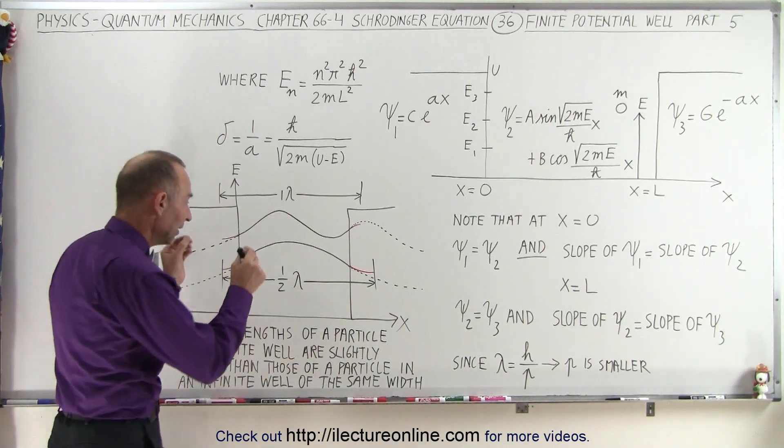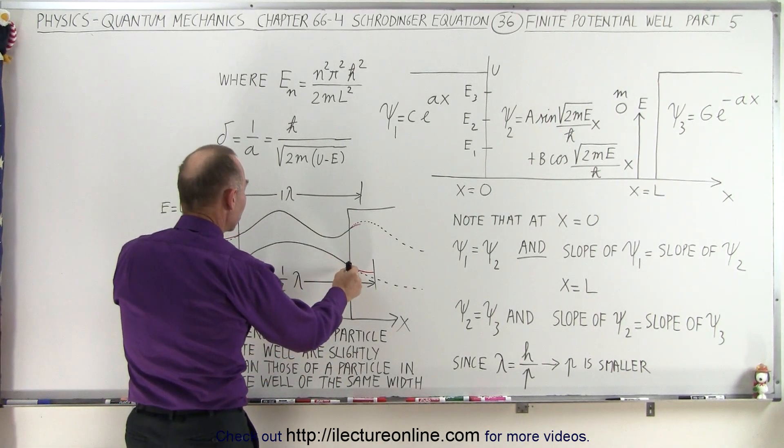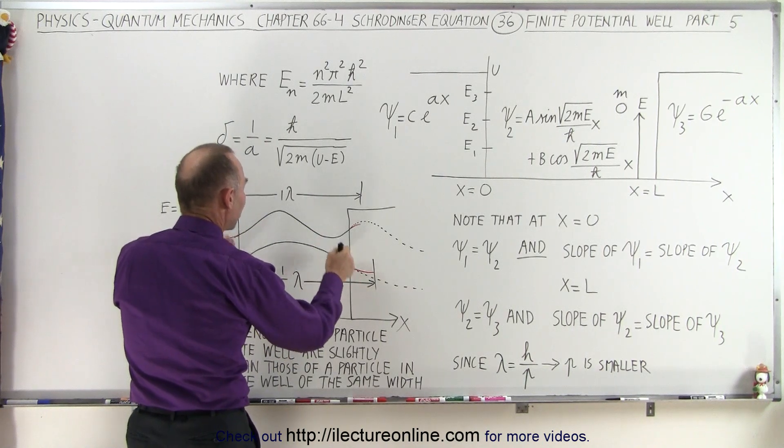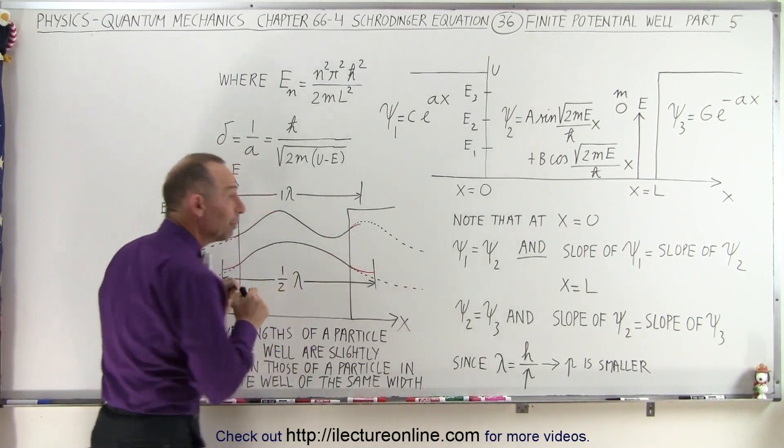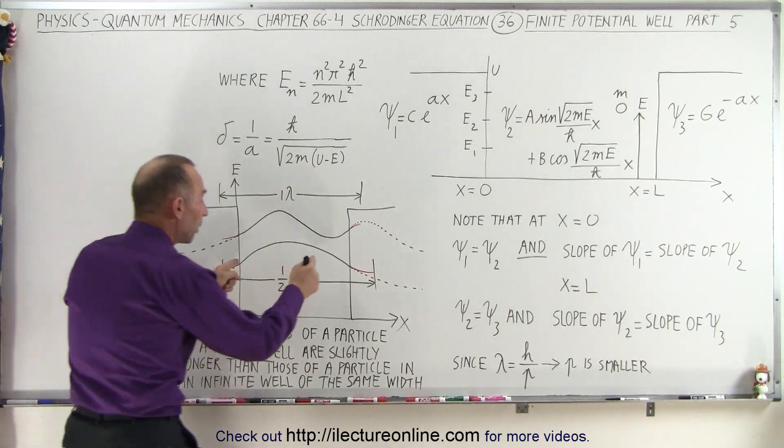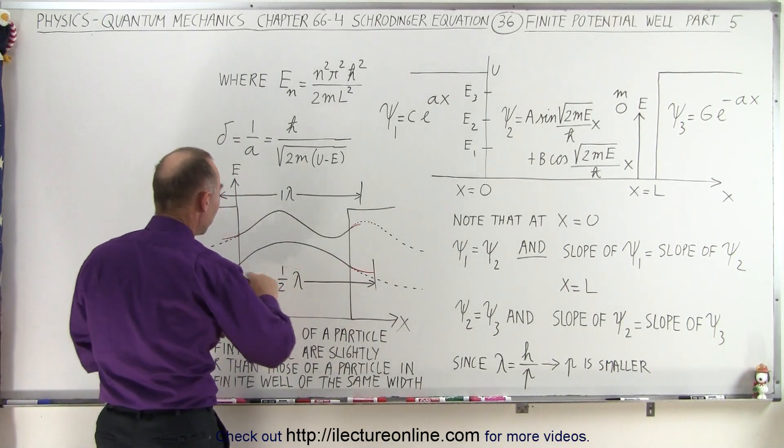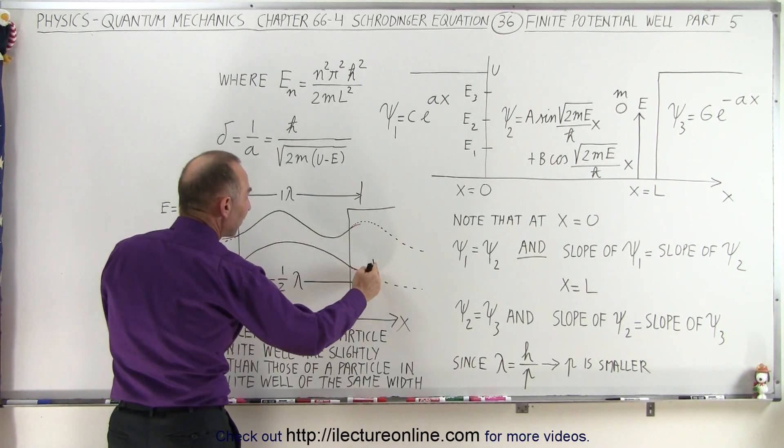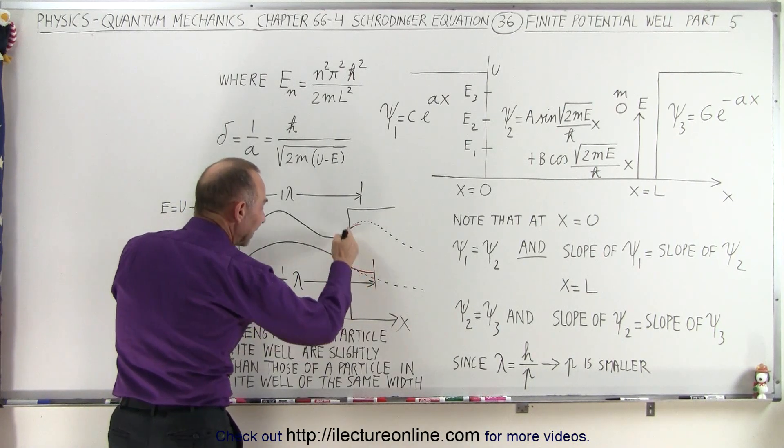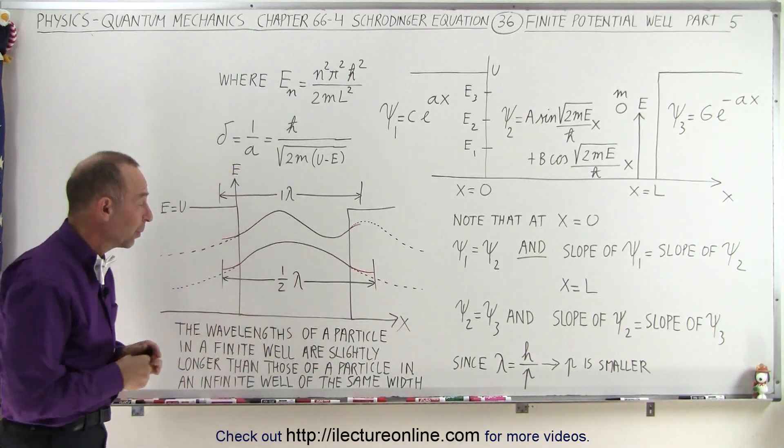Because therefore, in an infinite well, we know that the wavelength must stop exactly at the boundary, but in a finite well, we know the particle goes slightly beyond the boundary, and for the two functions to line up, we have to have a wavelength that's slightly longer than the width of the well.